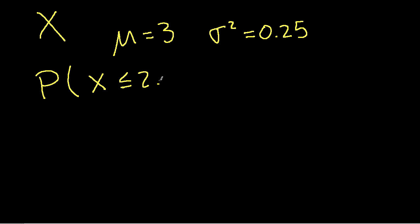So let's suppose as an example that we have a random variable X. And let's suppose that X has a mean of 3 and a variance of 0.25. And we want to find the probability that X is less than or equal to 2.5.